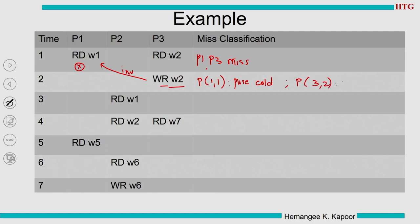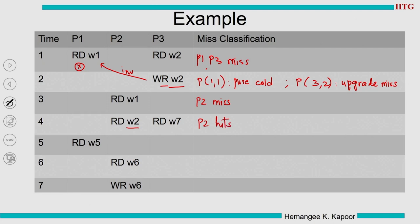Row 3: P2 wants to write. P2 will incur a cache miss — we cannot categorize it right now, we categorize it later. Row 4: this will be a hit because words 1, 2, 3, 4 are in the same block. So because of the earlier miss, there is now a cache hit.